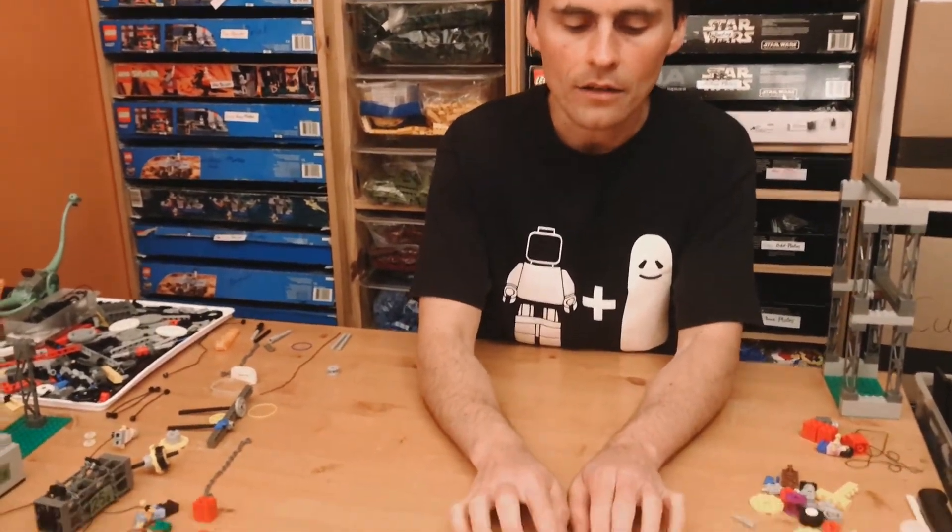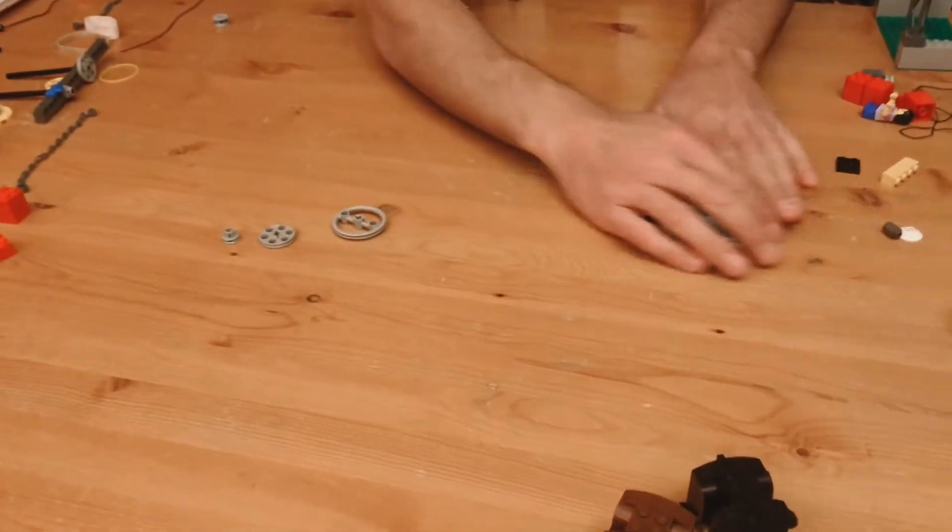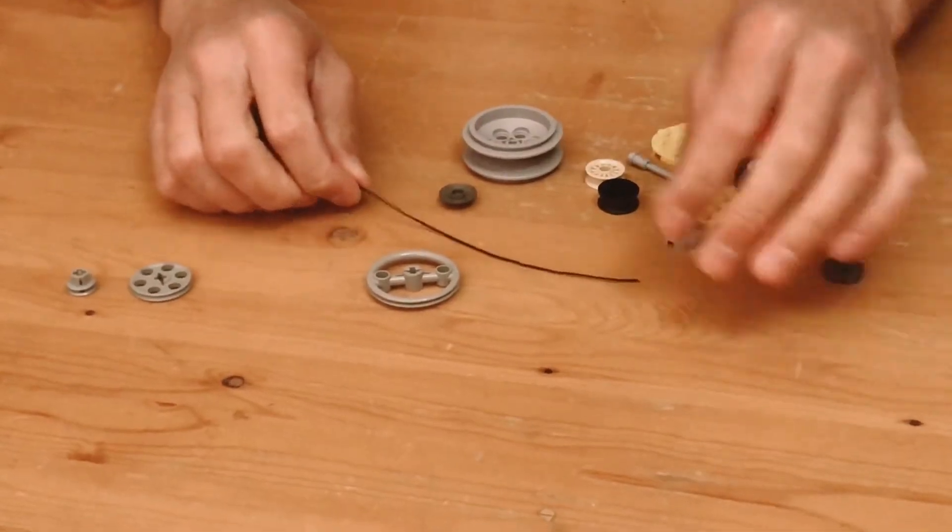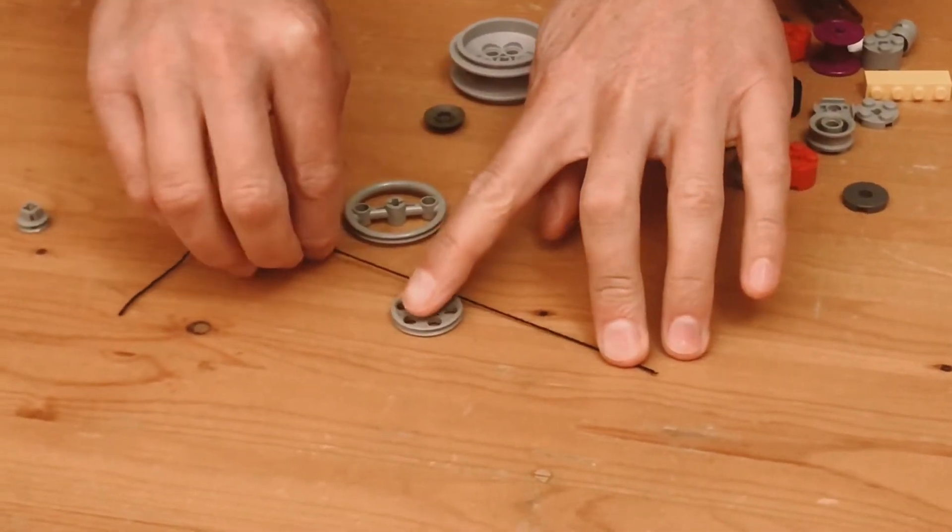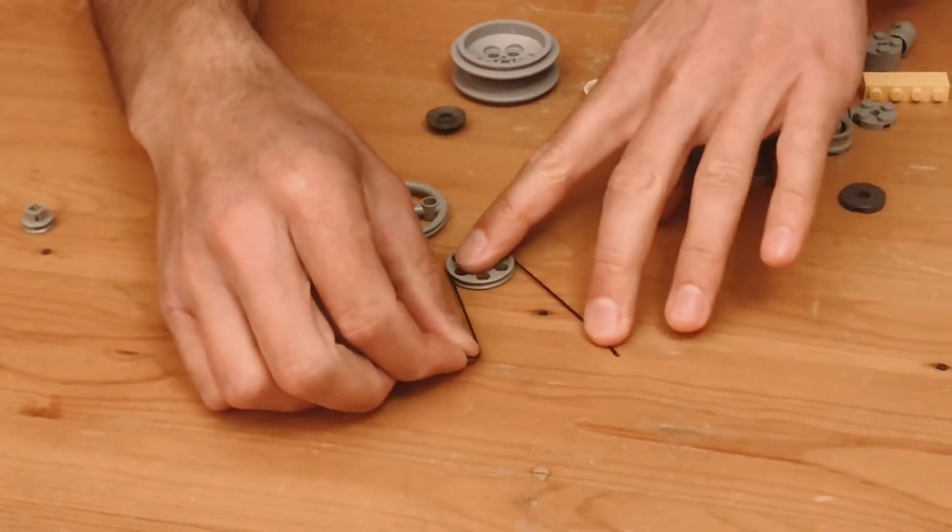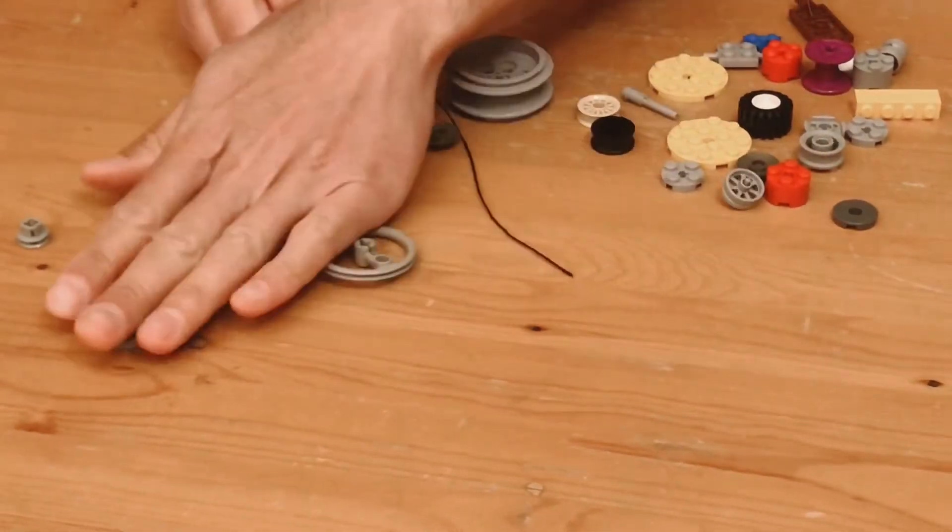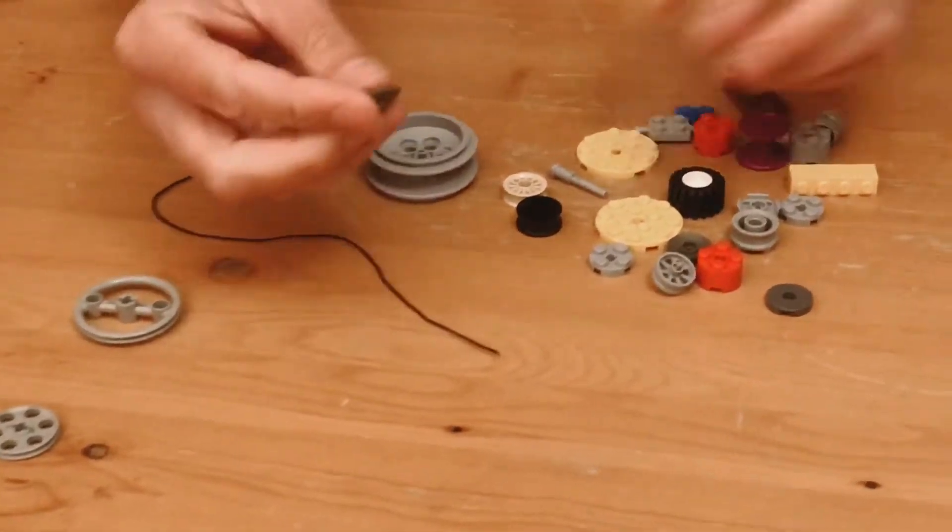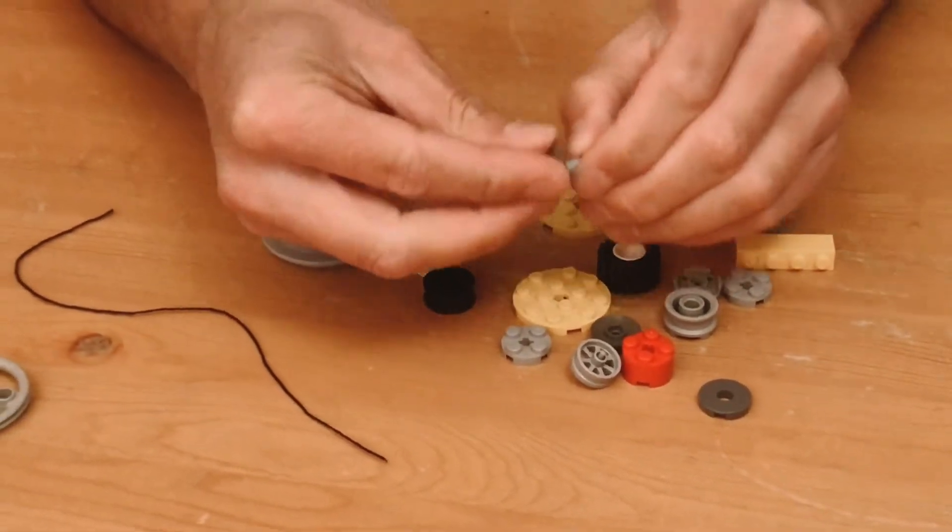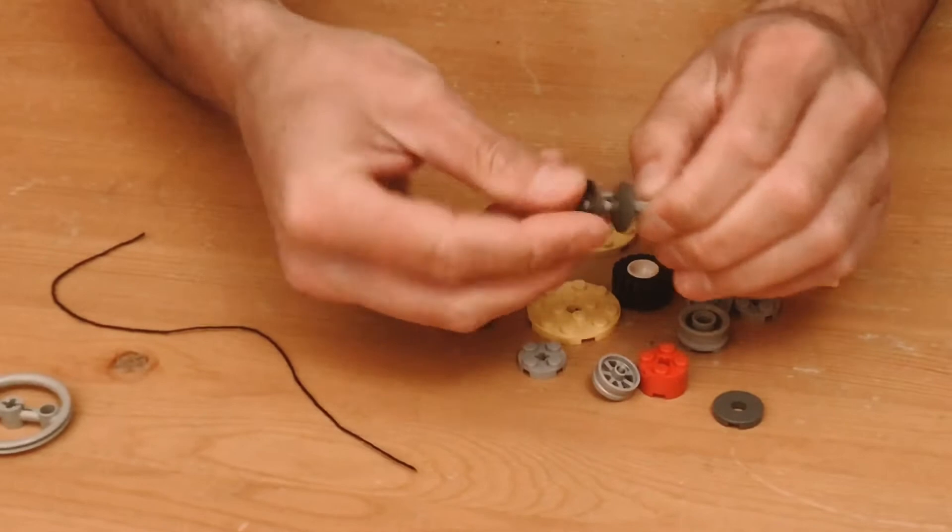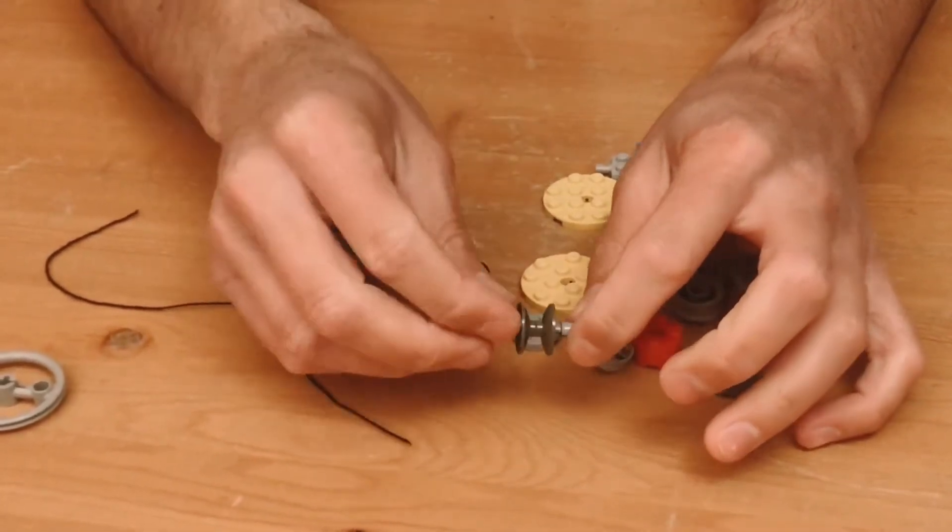If you don't have any Technic pulleys, there's no reason that you can't just make some. If I grab a little piece of rope here and run it over this pulley, you'll see that a pulley just has to be anything that can guide and control the movement of a rope. I can take this Technic pin and put a couple of radar dishes onto it, and that makes a nice pulley with a nice wide flange to capture the rope.